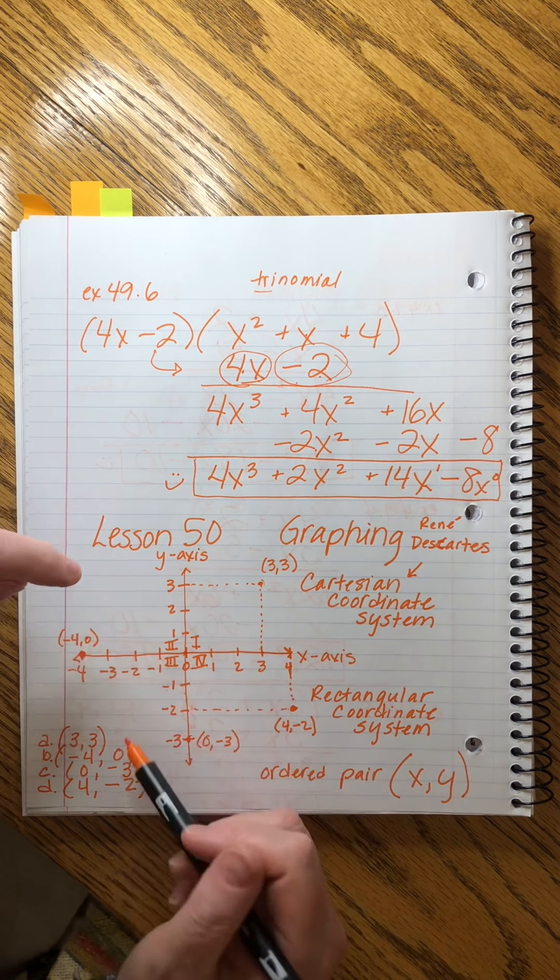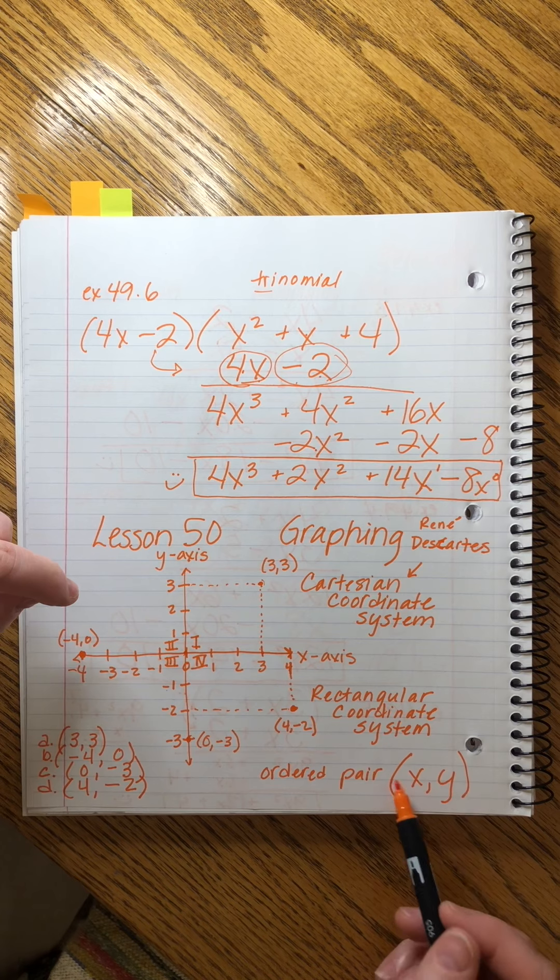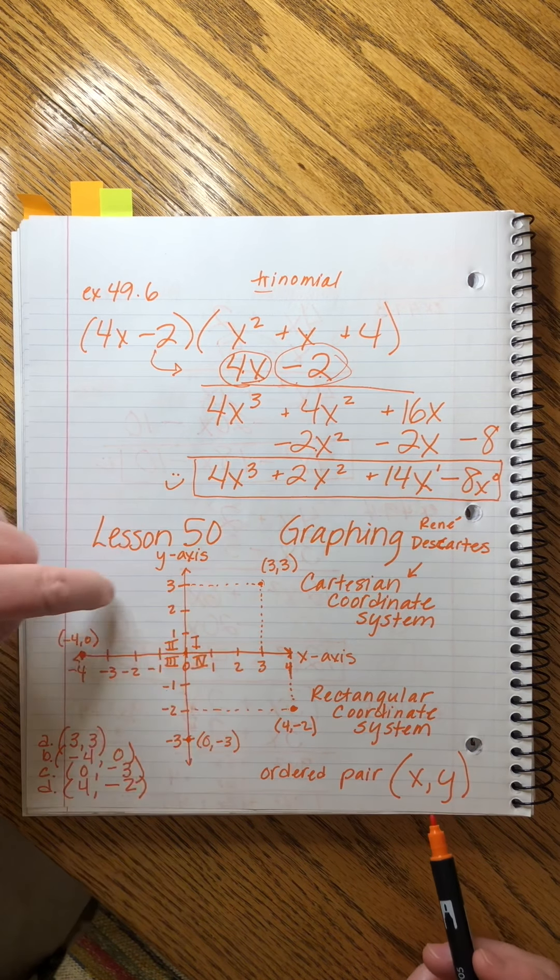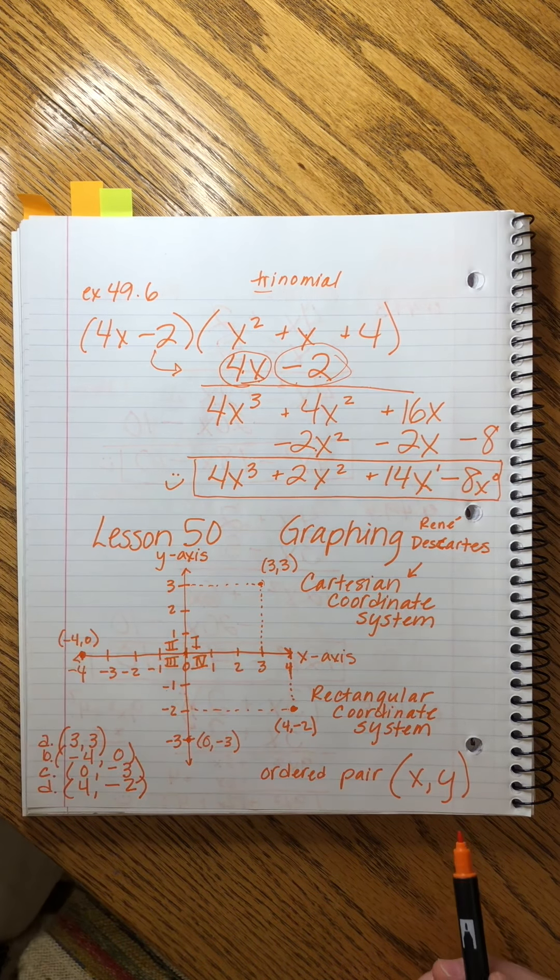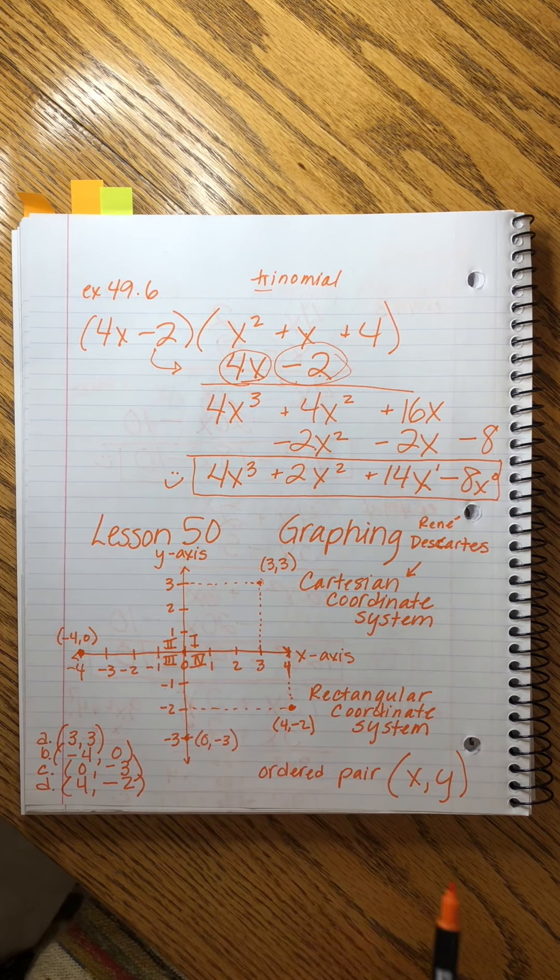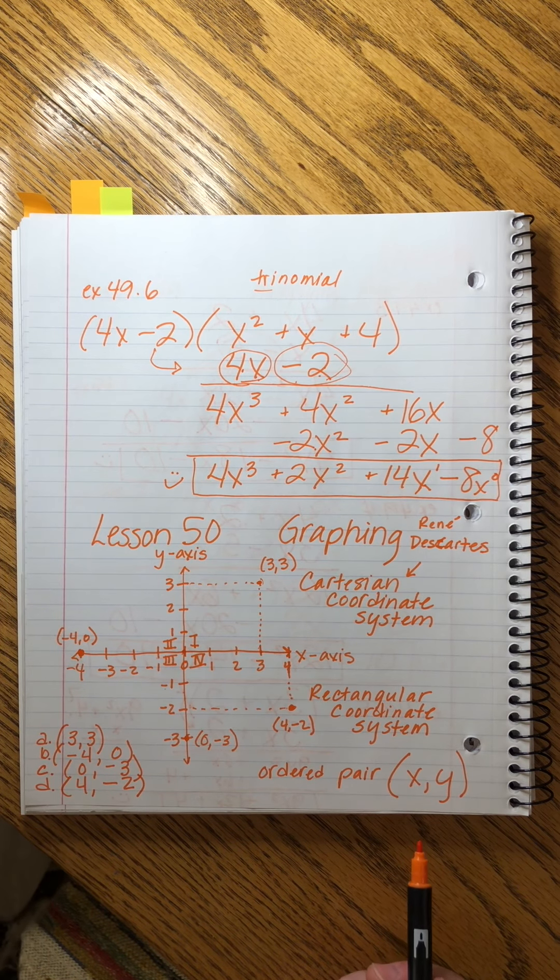And you'll notice there's a pattern to whether x and y are positive or negative. That will help us determine which quadrant, but we'll get into that later. So one, two, three, and four are the names of the quadrants.